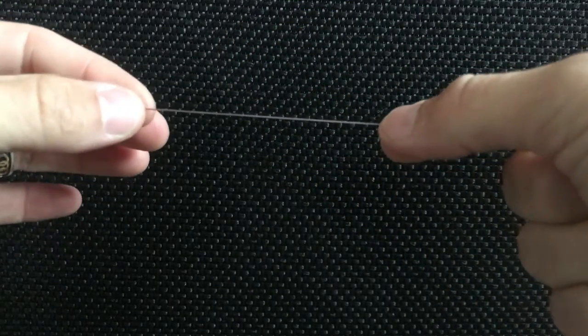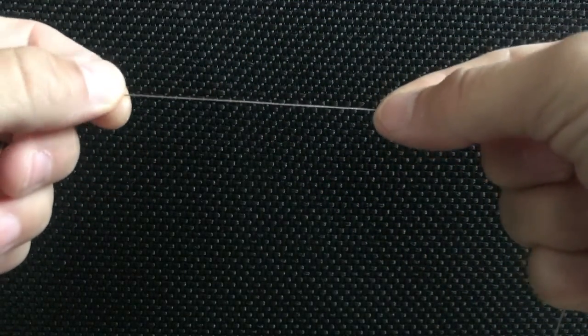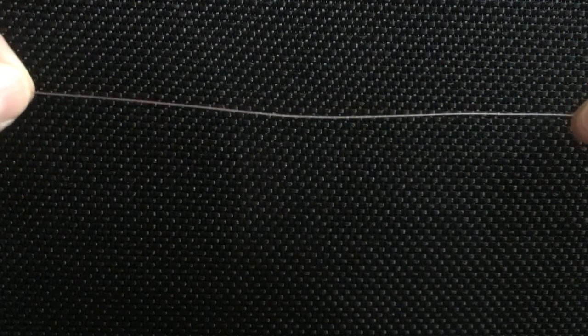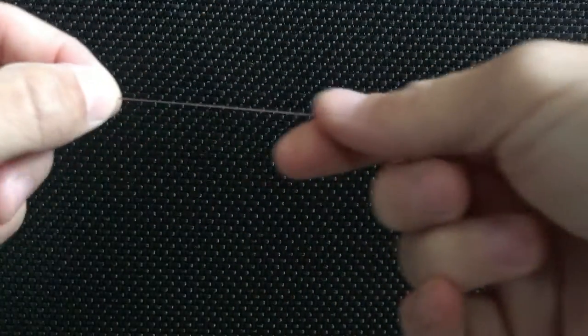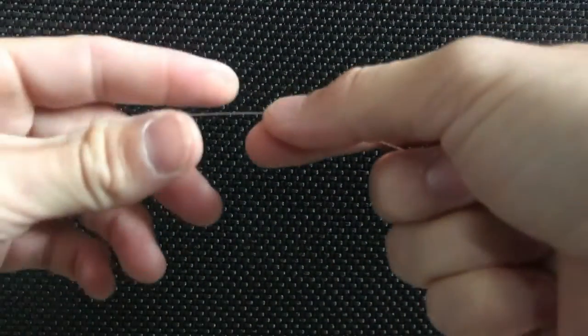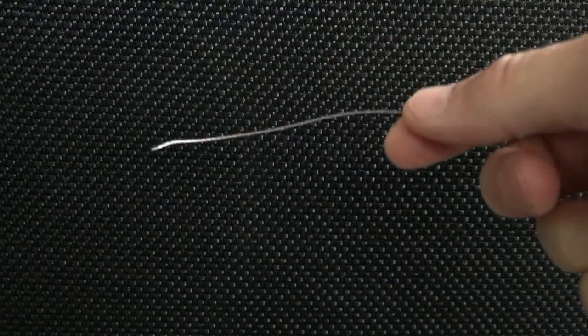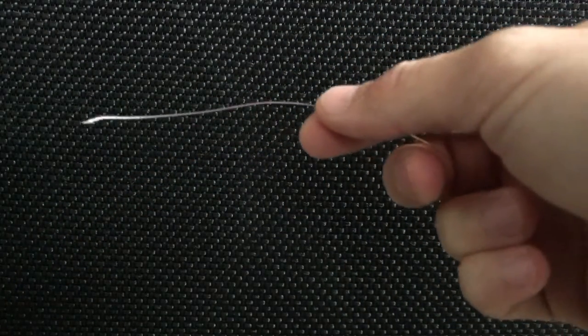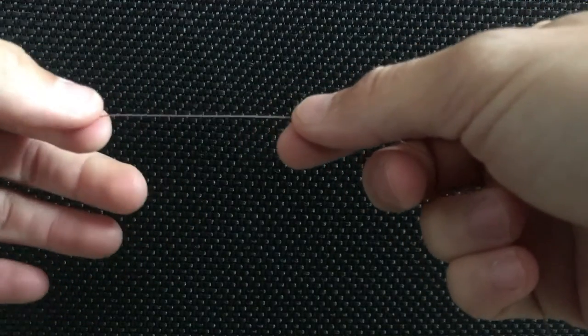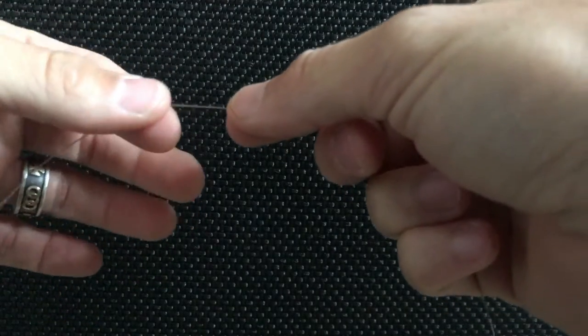The easiest loop knot known to man. You have your braid or your line, whatever type of fishing line you're using. You have your tag end and then the running end that goes to your reel. What you want to do is go about two or three inches up and you're going to make a loop.